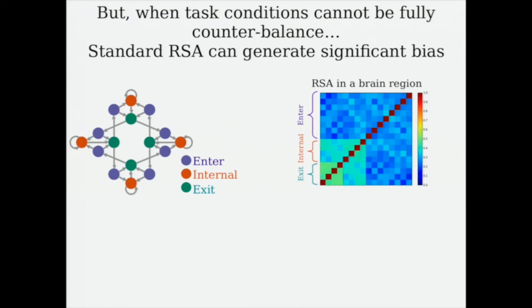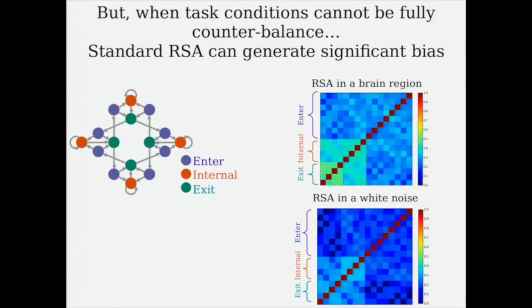If you apply RSA to one part of the brain, you might find an interesting structure. But if you apply the same method to white noise, you actually find a structure which is similar to what you see in the brain. Obviously, there shouldn't be any structure related to task within the white noise. Therefore, this method must have introduced some significant bias.